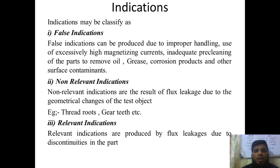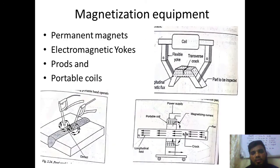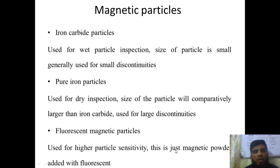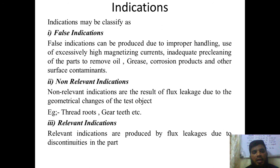Next, non-relevant indications happen as a result of flux leakage. Flux leakage is nothing but improper flux — if the setup is not touching properly or not having proper arrangement between the two surfaces, there will be flux leakage between the surfaces. For example, if you have two coils on one side and only one coil on the other, there will be different current flow and the flux will be leaking with no proper flux around the surface. This is due to geometrical changes of the testing object, such as thread roots, gear teeth, etc.